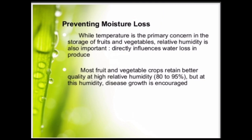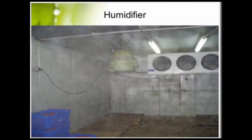Preventing moisture loss. While temperature is the primary concern in the storage of fruits and vegetables, relative humidity is also important, as it directly influences water loss in produce. Most fruit and vegetable crops retain better quality at high relative humidity — 80 to 95 percent — but at this humidity level, disease growth is encouraged. A humidifier may be used.